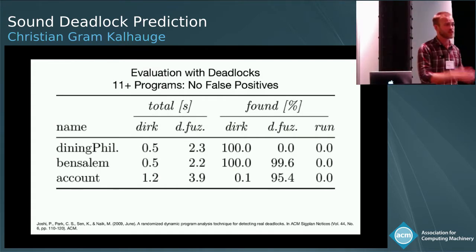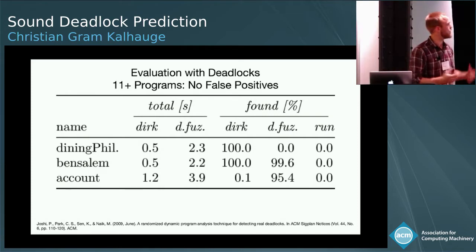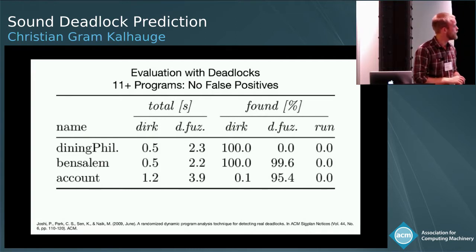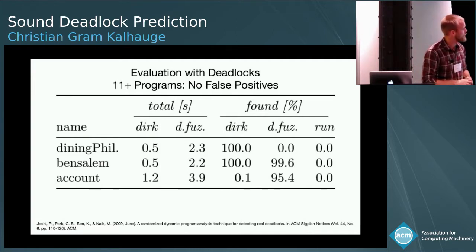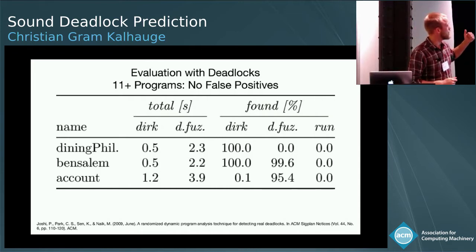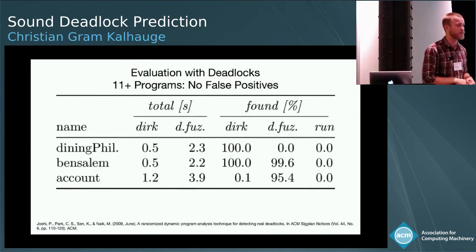We also did an evaluation with deadlocks — that was probably a good idea. We ran it on 11 programs listed in the paper, including all the DaCapo benchmarks. We never found a false positive. We also ran against Deadlock Fuzzer, which is a fuzzing tool. On small benchmarks, we are faster, and there exist examples where we can find a deadlock that Deadlock Fuzzer cannot — perhaps because it's too hard to execute or there are too many locks involved. Then there are examples where we are only slightly better.